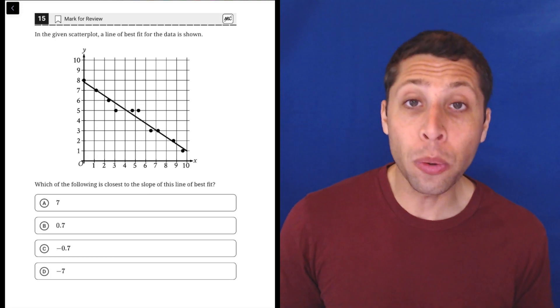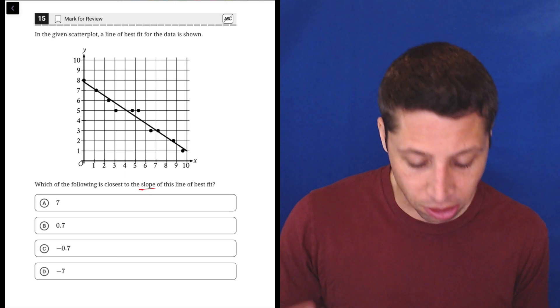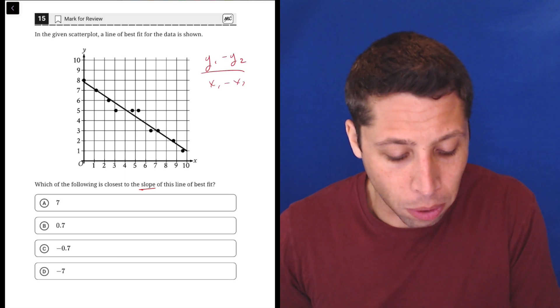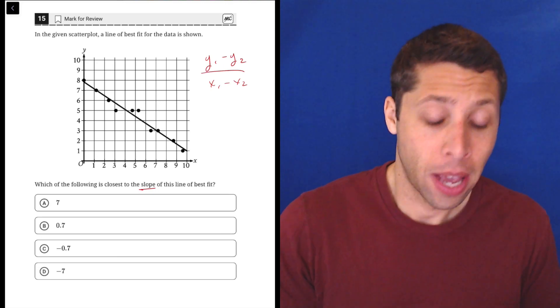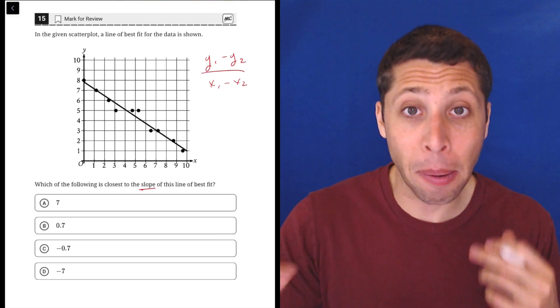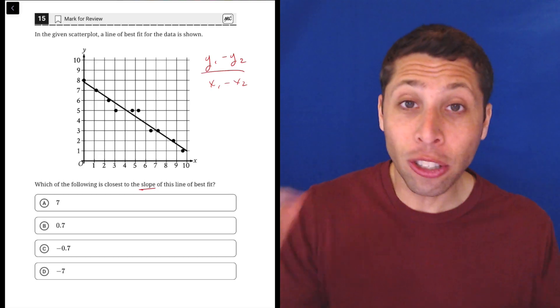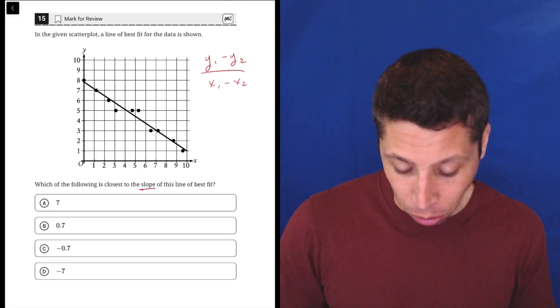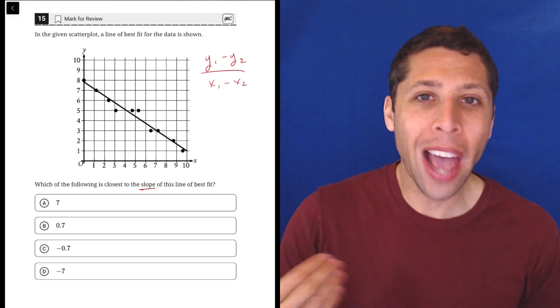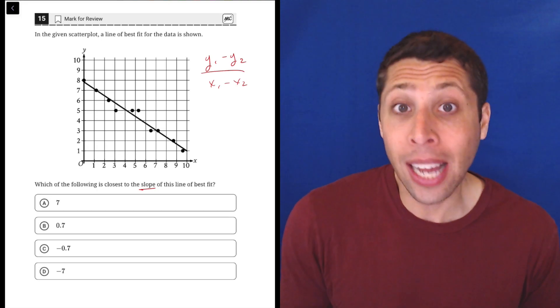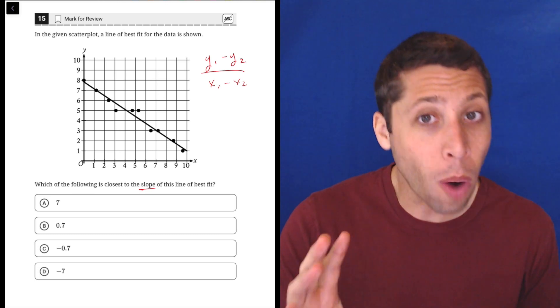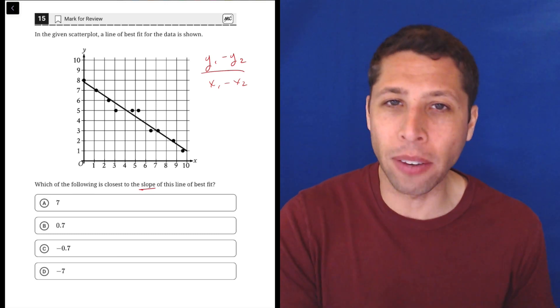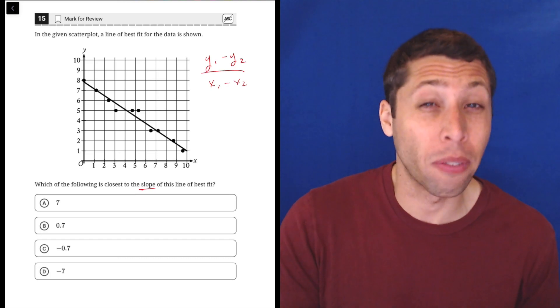What a lot of people do here is they hear okay I need to get the slope, and they've memorized something like y1 minus y2 over x1 minus x2 gives us the slope, and then they start picking some dots that they like, maybe dots that are close to the line, and actually doing calculations to find the slope. I do not recommend that. The answer choices are way too different for the actual calculation to matter. We can estimate here, and this is very common on the SAT.